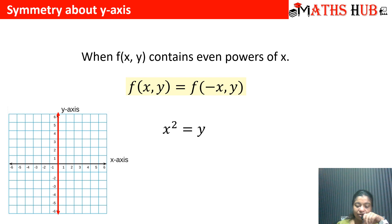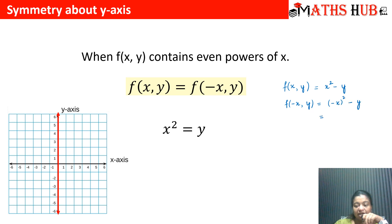For example, take f(x, y) = x² − y. When we replace x with −x, we get (−x)² − y = x² − y. The function f(x, y) and f(−x, y) are both the same, and hence this graph is symmetrical about the y-axis.